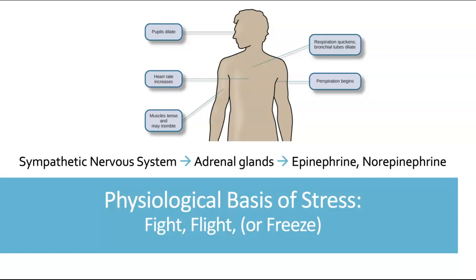The amygdala communicates with the prefrontal cortex — the part of the frontal lobe involved in our ability to think logically, problem solve, and make decisions. Most of the time, even if the amygdala thinks something is a threat, the prefrontal cortex is there to let it know that everything's okay and we don't need to panic. However, when a threat fully activates the amygdala, it's almost as if the prefrontal cortex has stepped aside and that alarm starts going off. The amygdala then communicates with other parts of the limbic system, triggering the sympathetic nervous system and the fight-or-flight response.